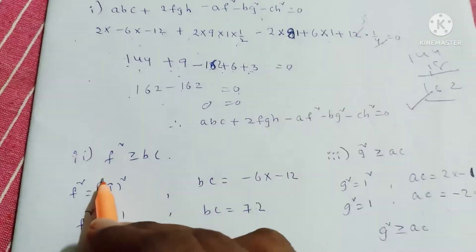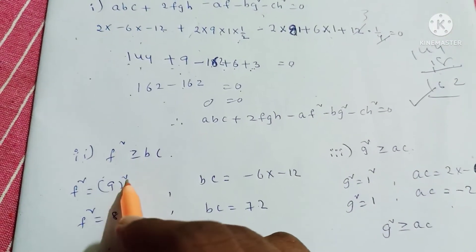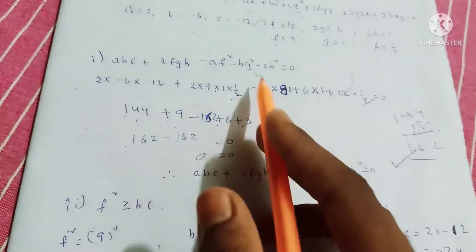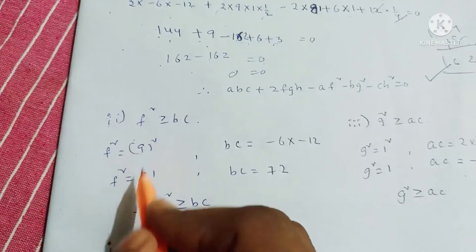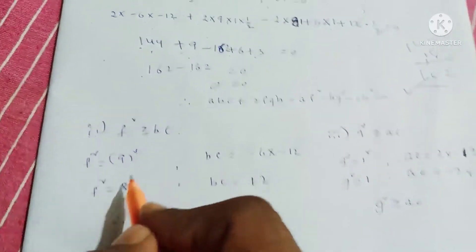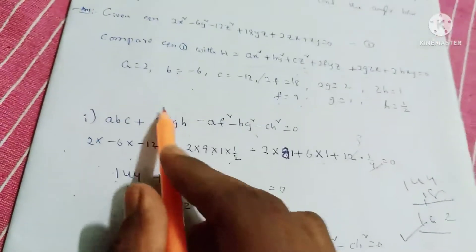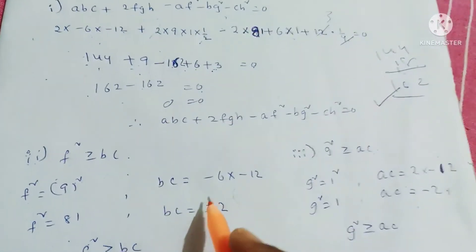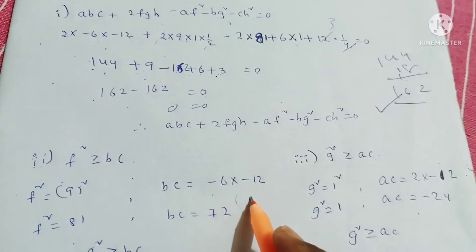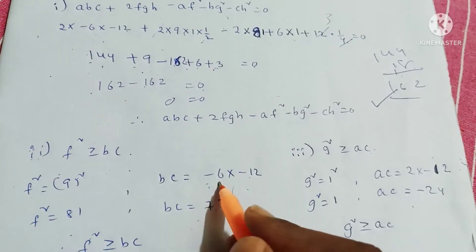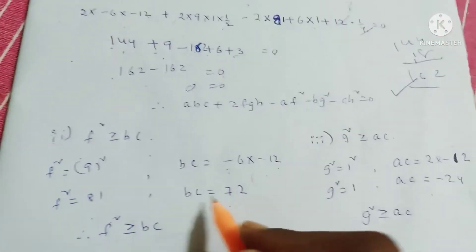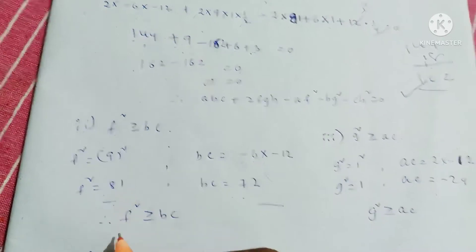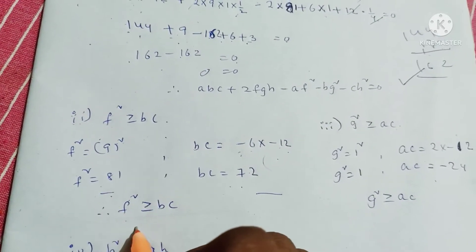Second condition: f squared is greater than or equal to bc. f equals 9, so f squared equals 81. bc equals b times c equals minus 6 times minus 12 equals plus 72. Since 81 is greater than or equal to 72, the second condition is satisfied.